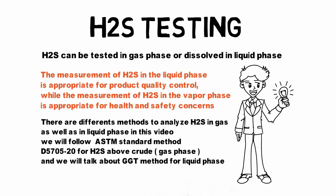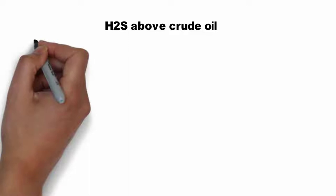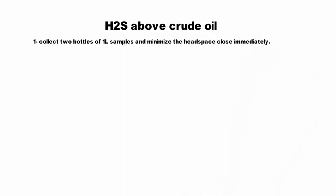Now we will talk about the ASTM standard method for testing H2S above crude oil. First, collect two one-liter sample bottles, minimize the headspace and close them tightly. Allow the samples to equilibrate to room temperature for one hour.